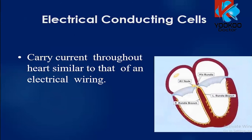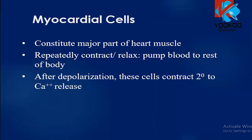The electrical conducting cells carry current generated from the sinoatrial node throughout the heart, similar to electrical wiring, reaching the myocardial cells in the ventricles and atria. The myocardial cells constitute the major part of the heart muscle; as an effect of the conduction, they repeatedly contract and relax, pumping blood to the rest of the body. After depolarization, these cells contract secondary to the release of calcium. During depolarization, there is a wave of positive charges within the heart muscles, causing progressive contraction of the myocardium.